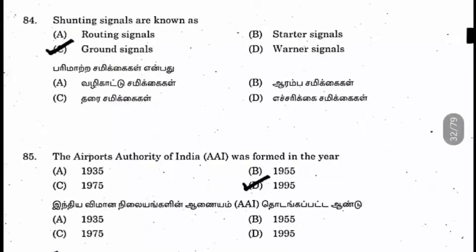So the ground signal is the shunting signal. Question 85: The Airports Authority of India was formed in the year 1995.